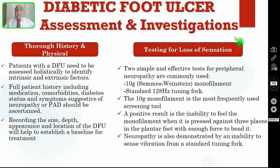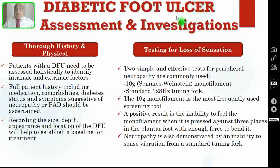Coming to assessment and investigation. First, you have to take a thorough history and physical. Patients with diabetic foot ulcer need to be assessed holistically to identify both intrinsic and extrinsic factors. Full patient history including medications, comorbidities, diabetes status and symptoms suggestive of neuropathy or peripheral arterial disease should be ascertained. You have to record the size, depth, appearance and location of the diabetic foot ulcer to establish a baseline for treatment. Then you have to test for loss of sensation. Two simple and effective tests for peripheral neuropathy are commonly used: the 10g Semmes-Weinstein monofilament test and the standard 128 Hz tuning fork test.